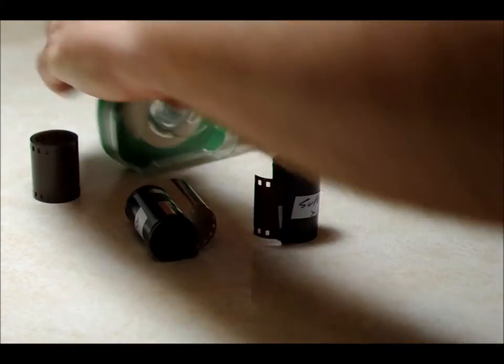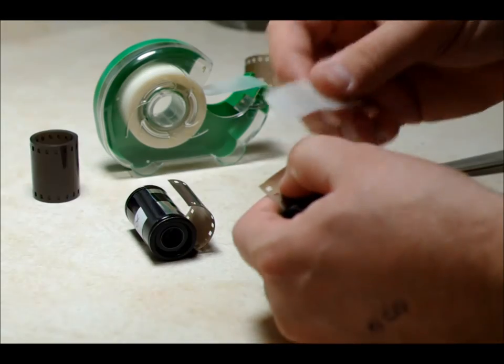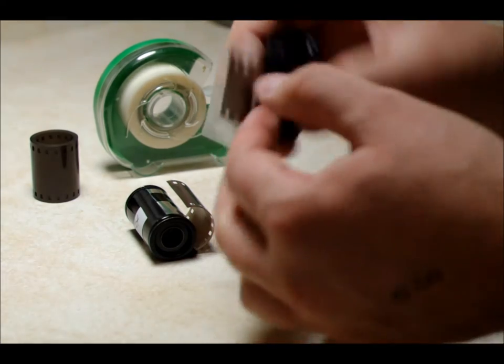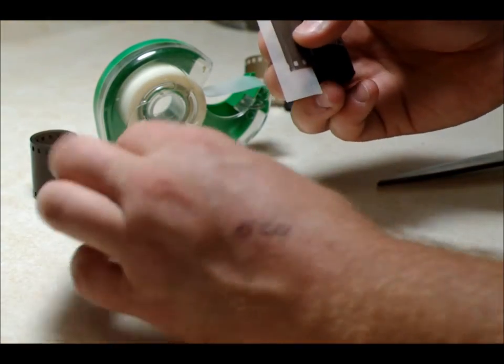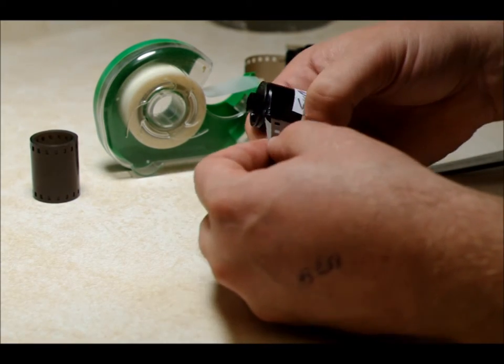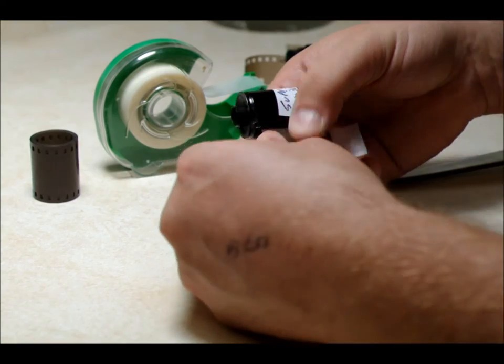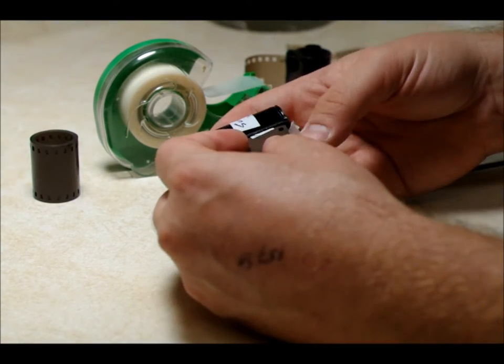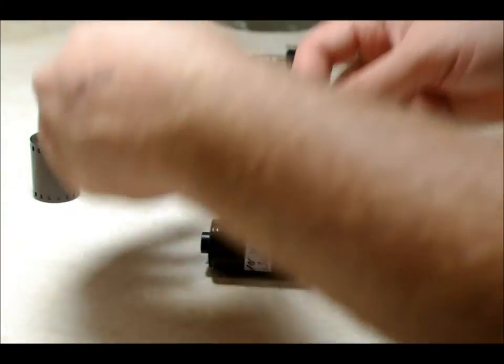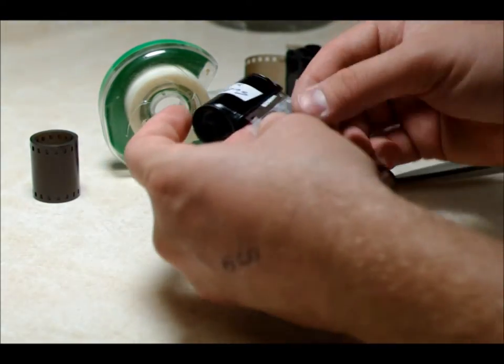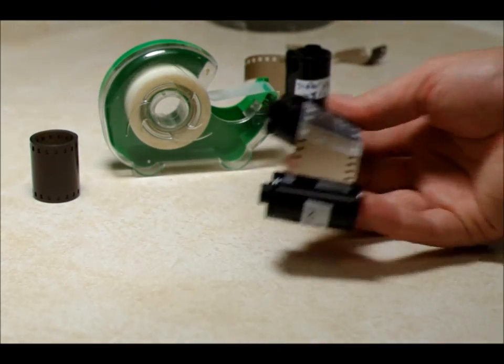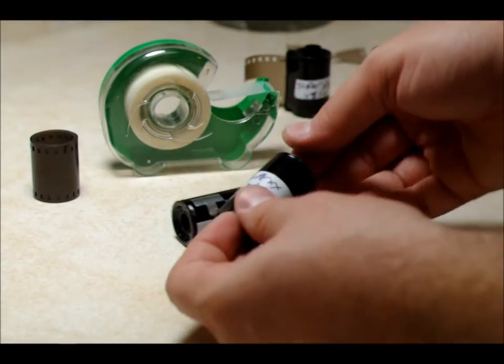Now we've got this flat edge here. So what we're going to do is we're going to take our cellophane tape. Now one thing to bear in mind with the cellophane tape is that it's pretty breakable and these edges are sharp. So it's possible that you can cut the cellophane tape on the film. Which isn't the end of the world. You just got to take the piece off and start over again. I'm going to put the second piece on to make sure that it's well adhered.